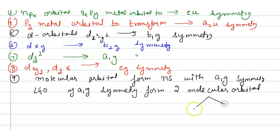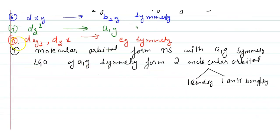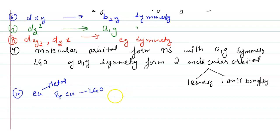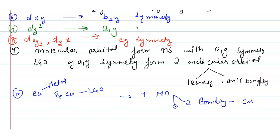One of those is bonding and the other is anti-bonding. Next, the eu set of the metal and the eu set of the LGO (ligand group orbital) combine to form four molecular orbitals: two bonding (eu) and two anti-bonding (eu*).